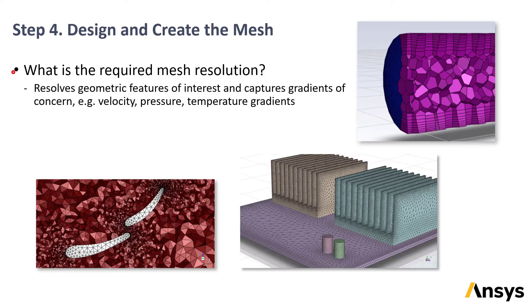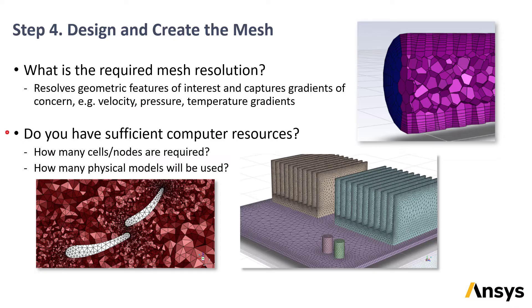After the geometry has been created, the final preprocessing step is creating the mesh. The mesh should be created such that grid points are close enough together to predict regions with high gradients in the flow or temperature fields, and so that all important geometric features are well resolved. In some cases, such as with shockwaves, it can be difficult to predict ahead of time exactly where higher mesh resolution will be needed. Also consider computer resources: the amount of RAM needed is proportional to the number of mesh nodes, so avoid a situation where there are more nodes than your system can handle.